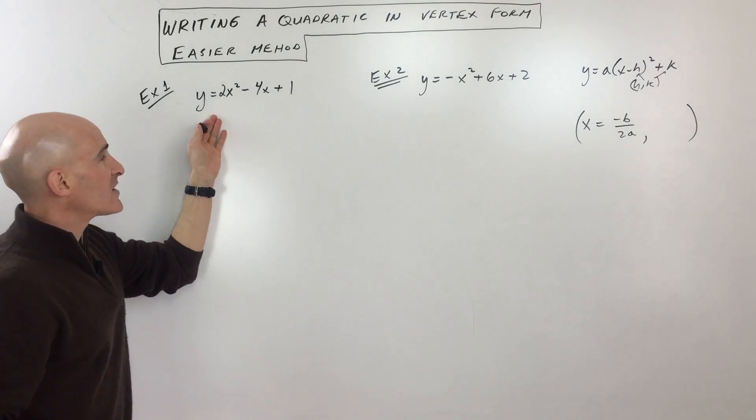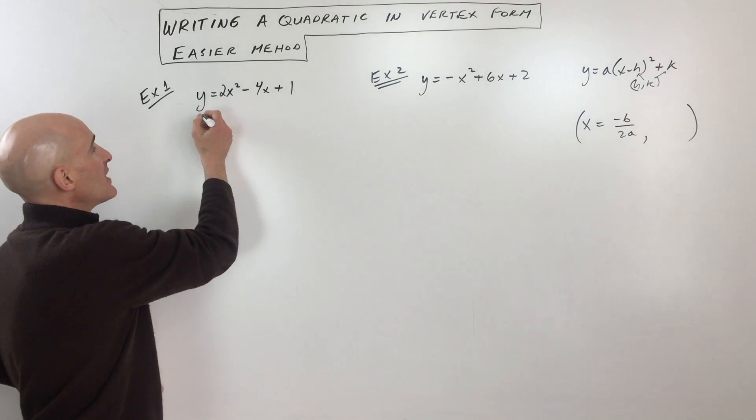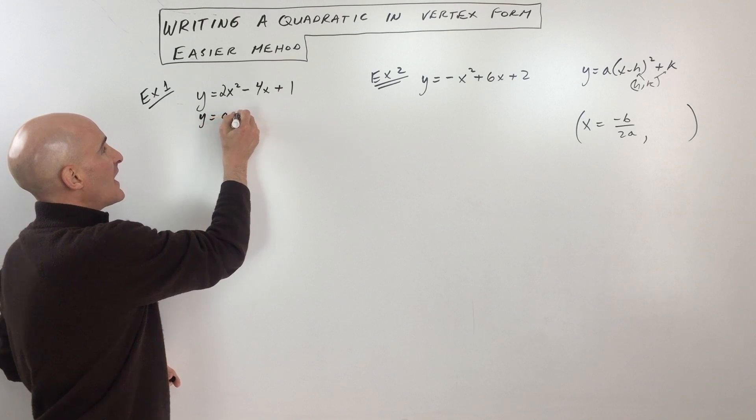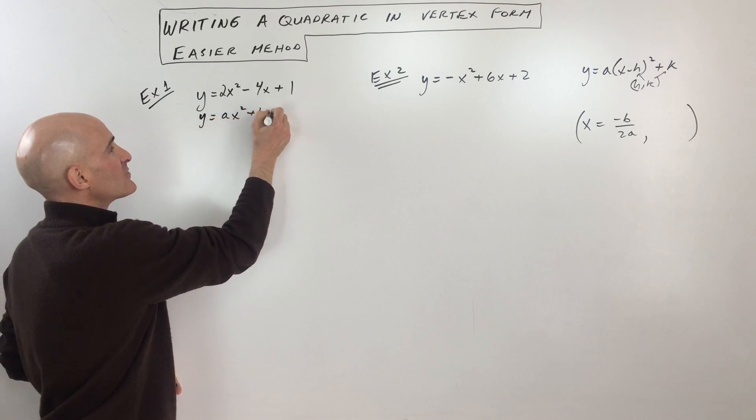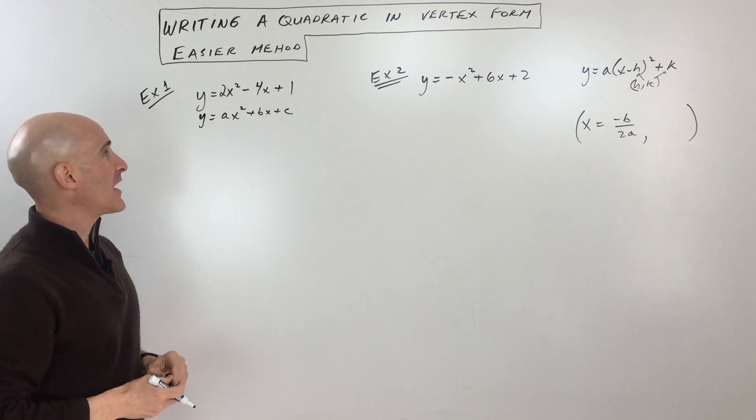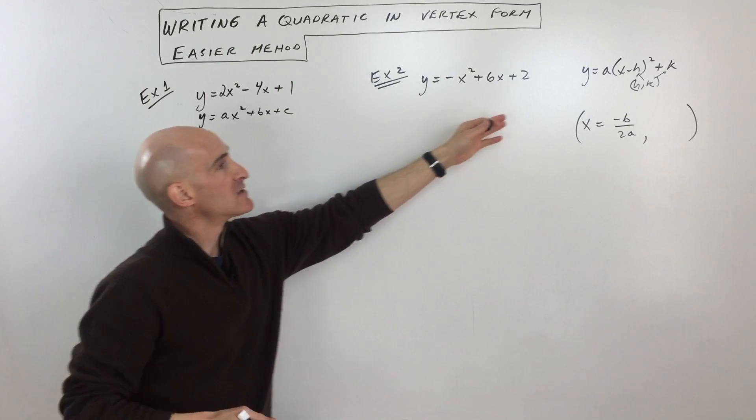Now, the form that they're giving us the quadratic in here is actually the y equals ax squared plus bx plus c, or the general form of the quadratic. And so what we need to do here is we need to go from this form to this form.